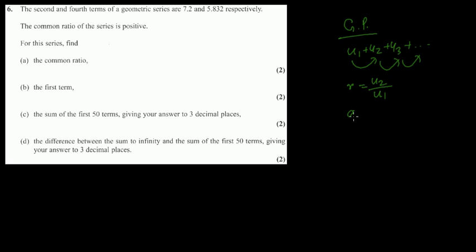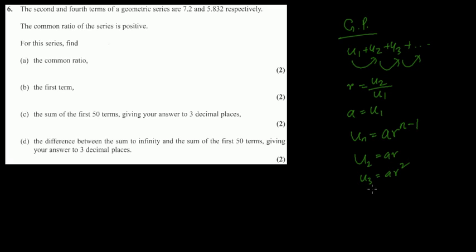The first term is called 'a' and the nth term at position n is given by a times r to the power n minus 1. So u2 would be ar, u3 would be ar squared, u4 would be ar cubed, u5 would be ar to the power 4, and so on.